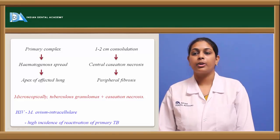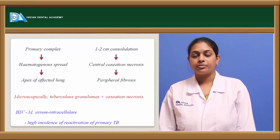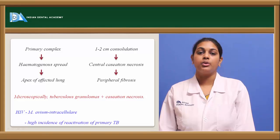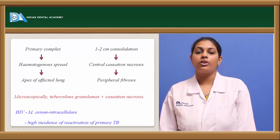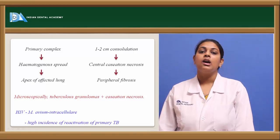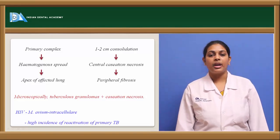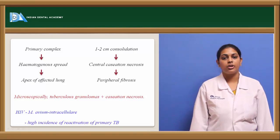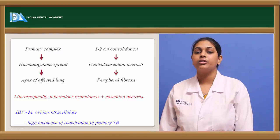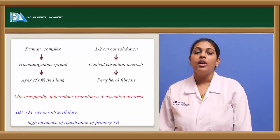HIV patients are most commonly infected with secondary tuberculosis because of reactivation of primary tuberculosis. The species most commonly causing secondary tuberculosis in an immunocompromised HIV patient is Mycobacterium avium intracellulare.